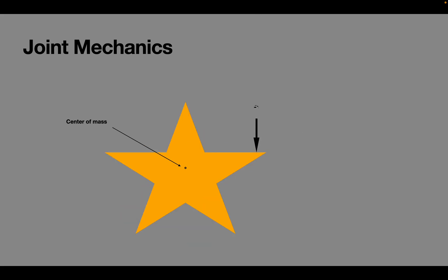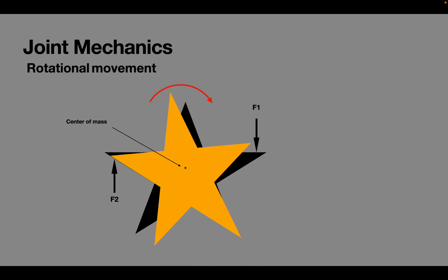Two forces F1 and F2 which are equal in magnitude, acting in opposite directions, are parallel and non-collinear, also produce a rotational movement and are called force couples. Note that force couples is another way to produce torque.